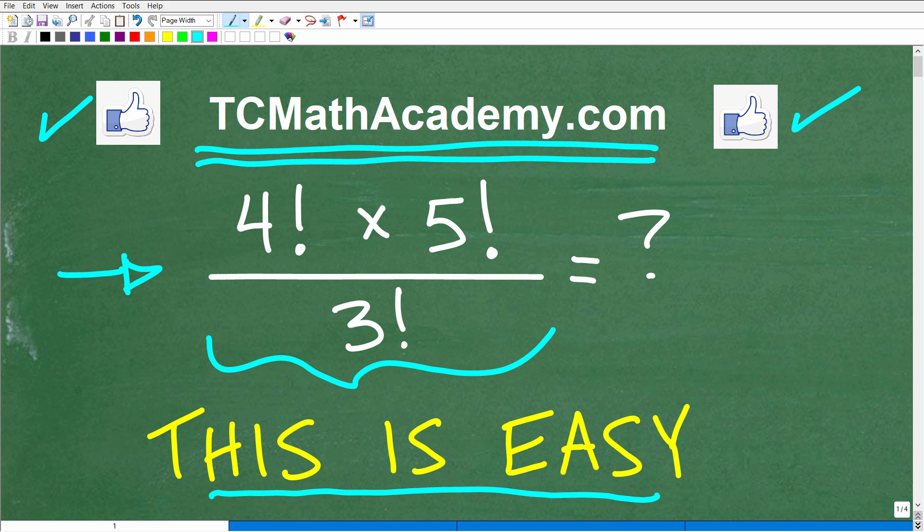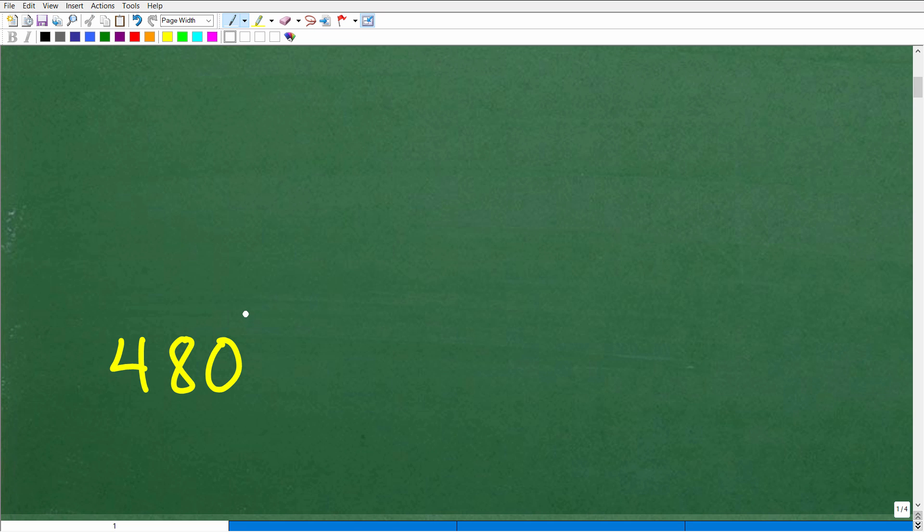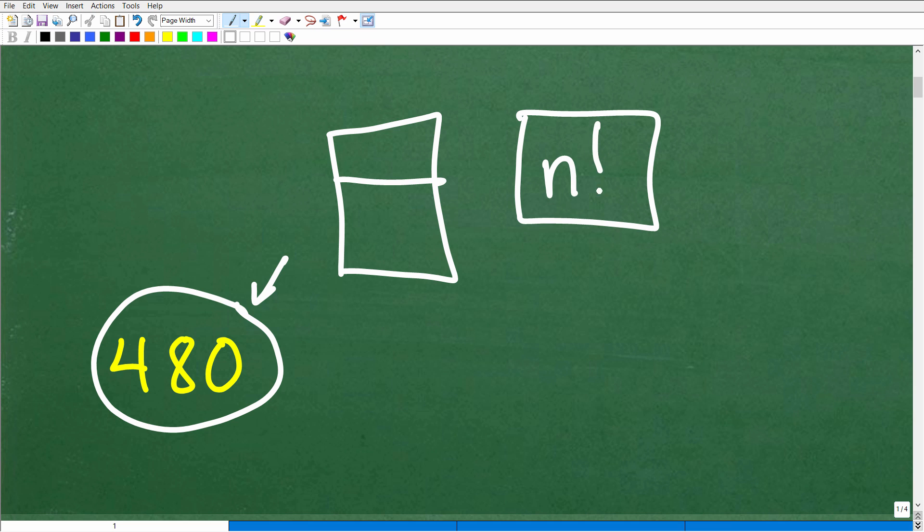So let's go take a look at the answer here. If you don't know what this means, hold on just one second. But the answer here is 480. Now, if you have a fancy calculator, like a scientific or graphing calculator, you can do this using your calculator. There's a button on your calculator that looks like an n factorial or something like that.